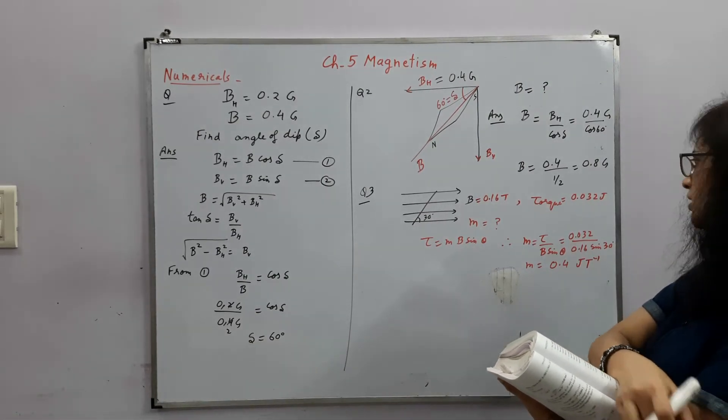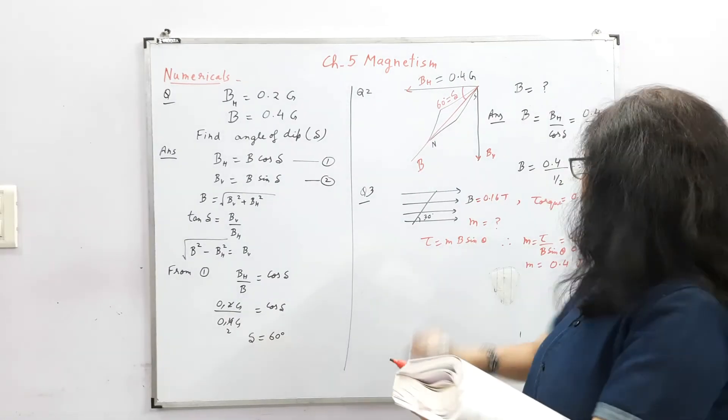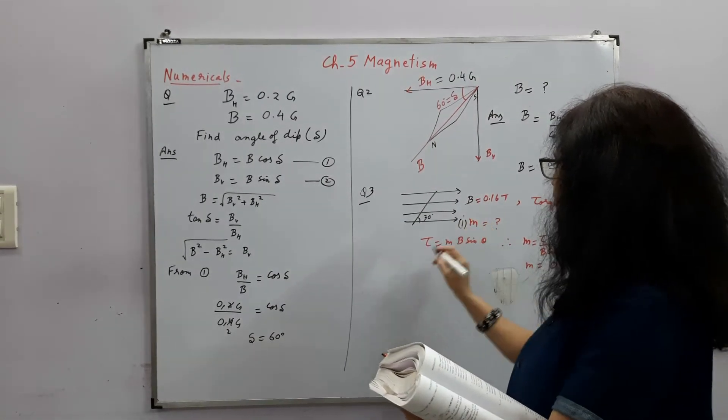So Newton meter is what? It's joules also. So joules upon tesla. So this was our first part of question. This was the first part of the question.